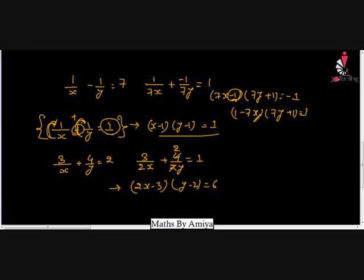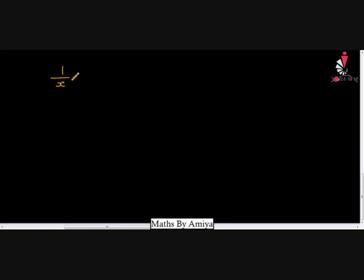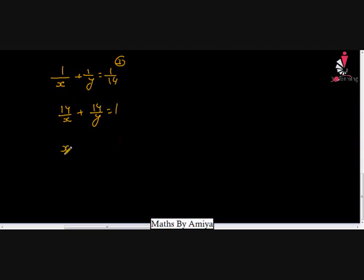I am solving one question, then we will apply the same concept to our main questions. If we have 1/x plus 1/y equal to 1/14, we want RHS to be 1, so multiply through by 14: 14/x plus 14/y equal to 1. The factor equation is (x minus 14)(y minus 14) equal to minus 14 times minus 14, which is 14 squared.